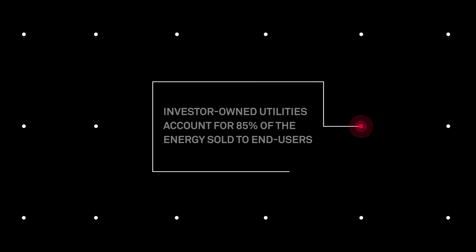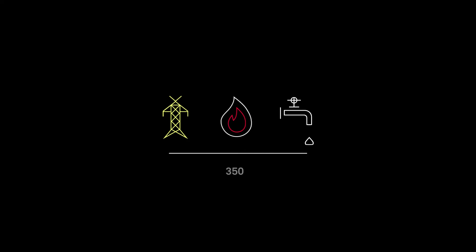What is the market? The U.S. has 53 state-level regulatory bodies responsible for setting utility rates. Investor-owned utilities account for 85% of the energy sold to end users. S&P Capital IQ Pro follows regulatory developments for 350 investor-owned electric, gas, and water utility companies operating in the U.S.